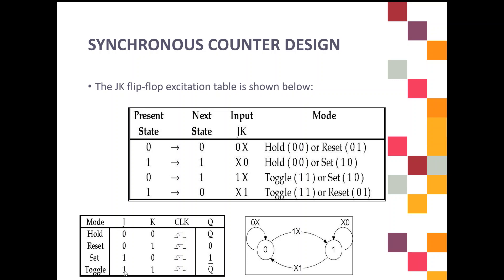For each combination of J and K, there is one mode. When J=0 and K=0, the mode is Hold. Hold means the output Q retains the same value — if the previous state is 0, the next state Q is also 0. When J=0 and K=1, the mode is Reset. Reset means Q will equal 0.